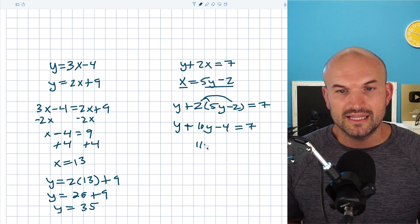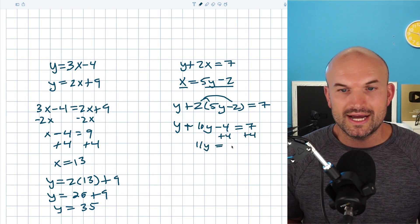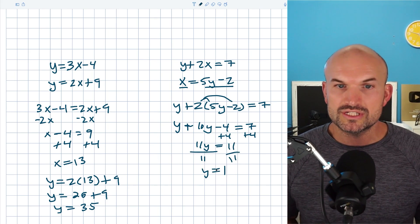Y plus 10y is going to be 11y. And then I'll add 4 to the other side. And therefore 11y is going to equal 11. I can just divide by 11 on both sides. And I can say y is now equal to 1.